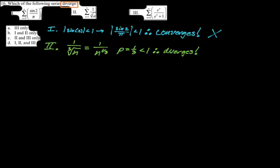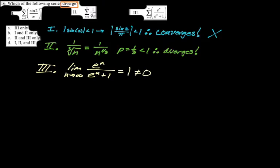Number three: when I look at a series and can't immediately identify it, I suspect the limit is not zero — nth term test. Taking the limit as n approaches infinity of e to the n over e to the n plus one gives exactly one, which is not zero. Therefore this diverges as well. The question is about divergence, so the answer is C, including both two and three.